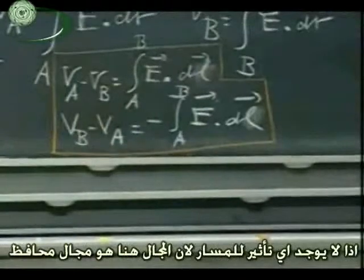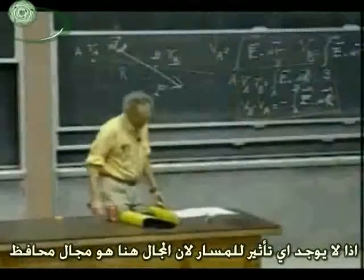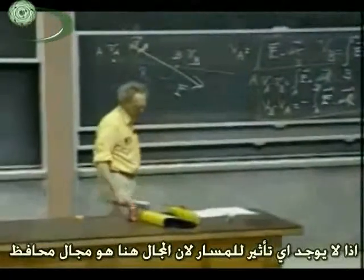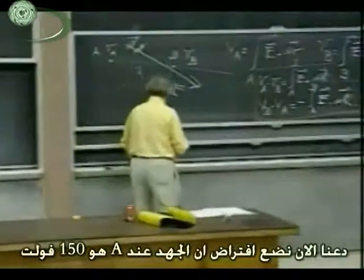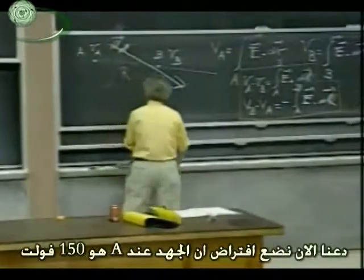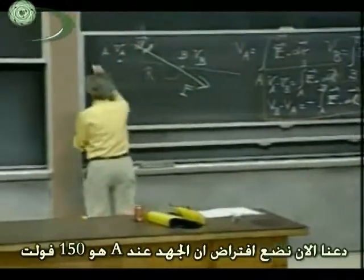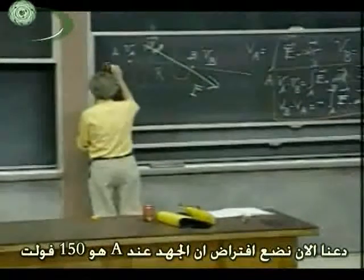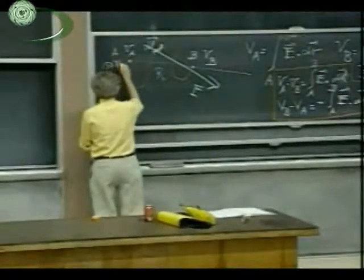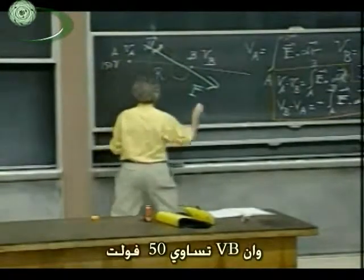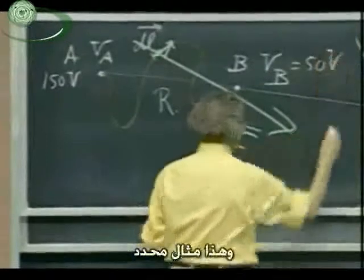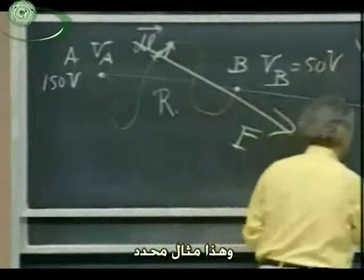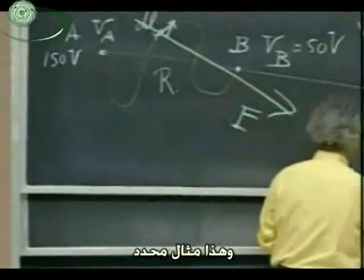It makes no difference how you march because we are dealing here with conservative fields. Let's now make the assumption that VA is 150 volts and that VB, for instance, is 50 volts. So it's a very specific example.